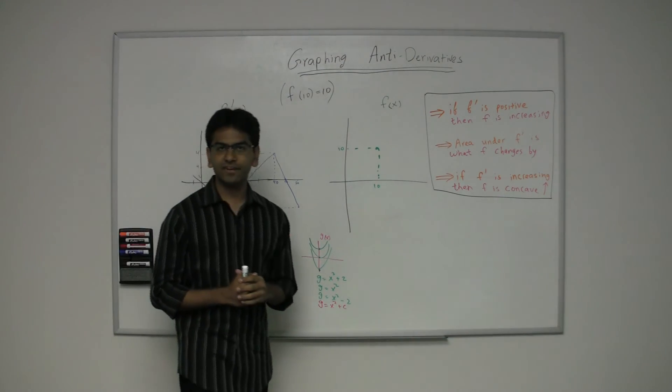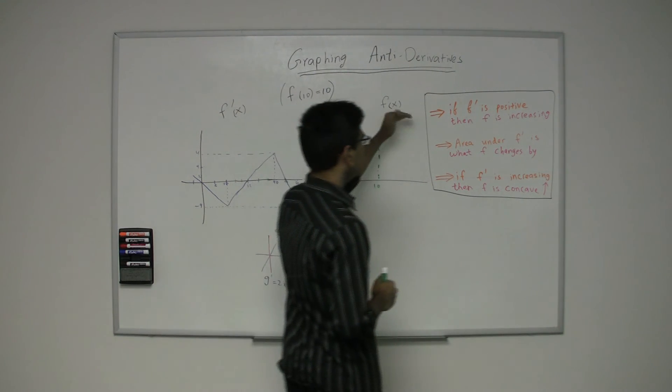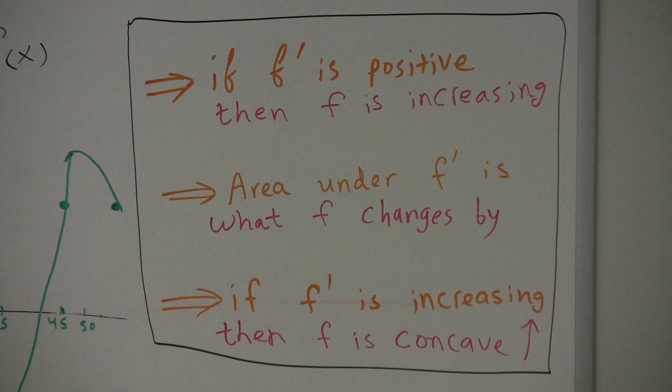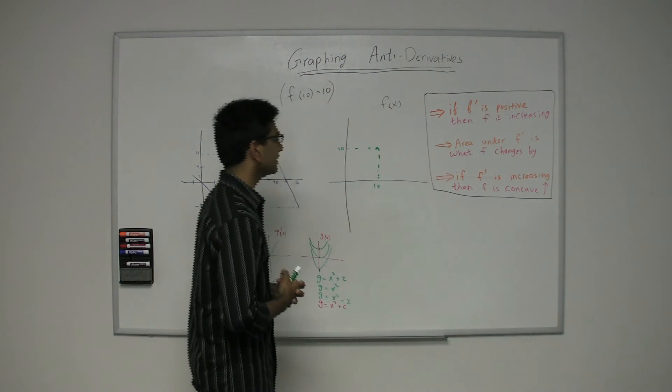So here we're going to look at three basic things to keep in mind. The first is that if f prime is positive, then f is increasing. Of course, if f prime is negative, then f is decreasing. So let's look at that first.